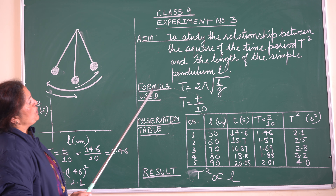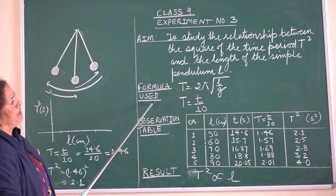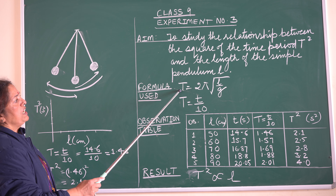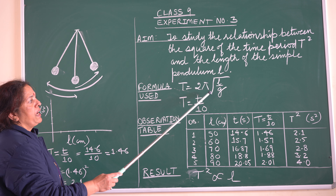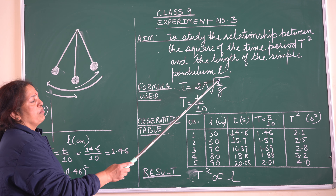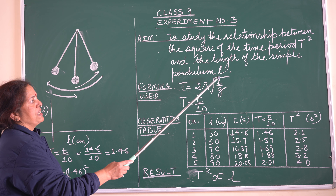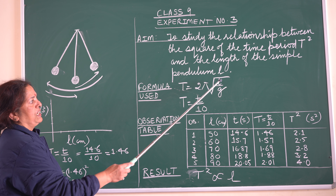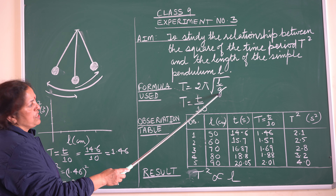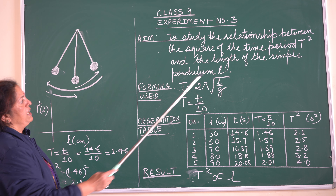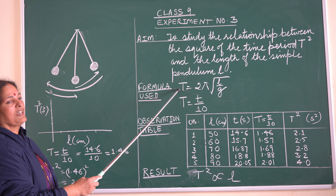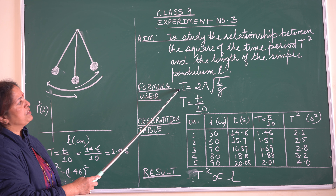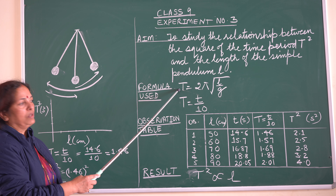The formula used here will be T = 2π√(l/g), where L is the length, G is the acceleration due to gravity, and T is the time period of the simple pendulum.